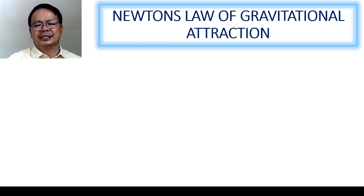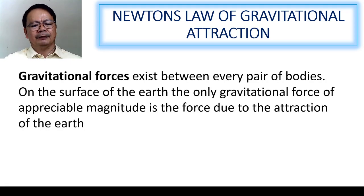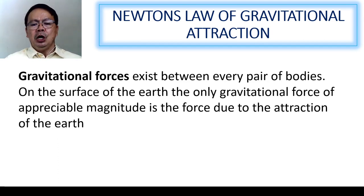Newton also formulated the laws of gravitational attraction. And according to this statement, the gravitational forces exist between every pair of bodies on the surface of the Earth. The only gravitational force of appreciable magnitude is the force due to the attraction of the Earth. And why would that be? Because the mass of the Earth is very great. If it would be compared to the mass of any object near the surface of the Earth that is very small, therefore, the gravitational attraction exerted by that small body upon the Earth would be very small. But the gravitational attraction of the Earth exerted upon that small body would be appreciable in magnitude. And we call that as the gravitational force.